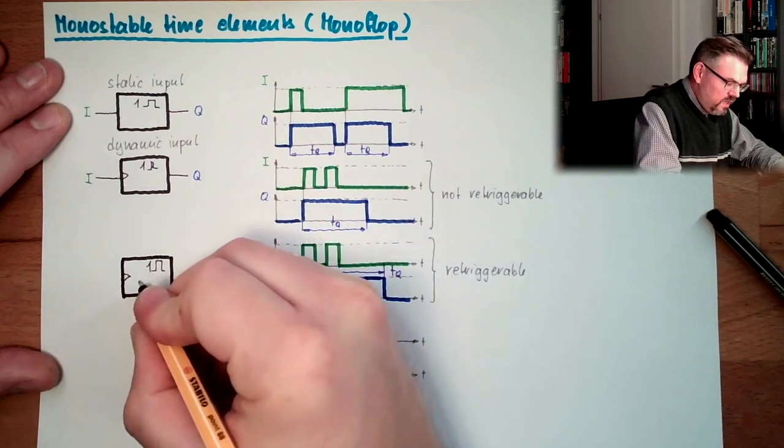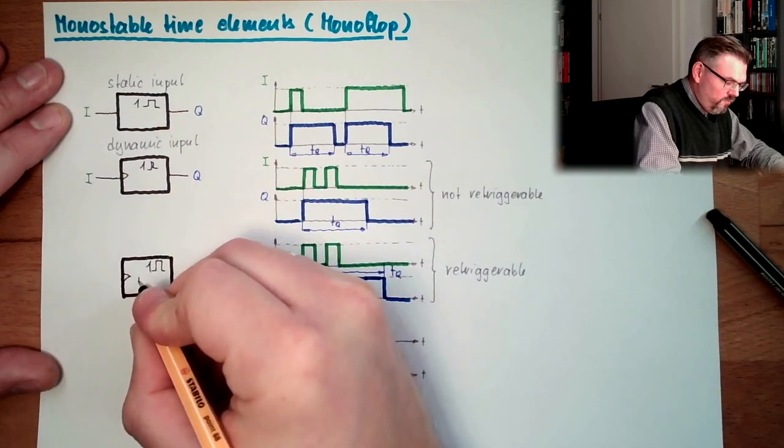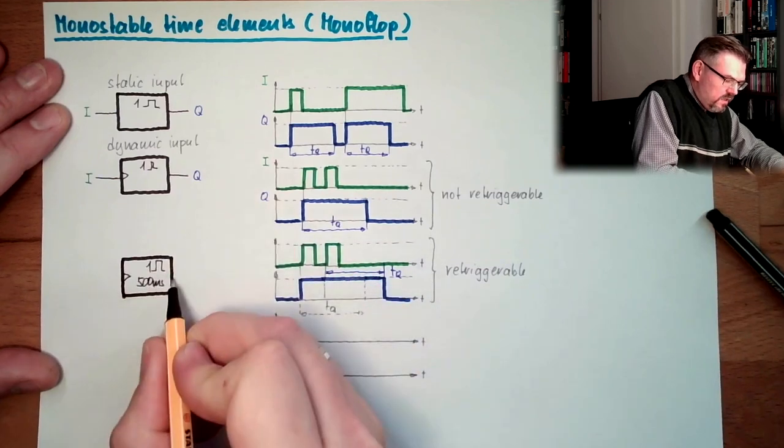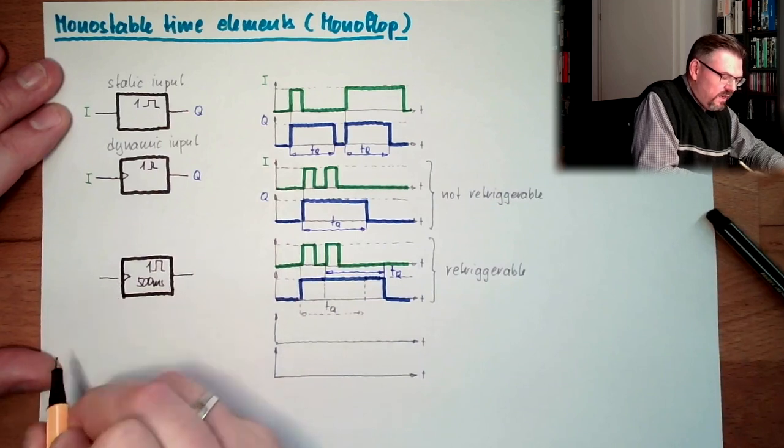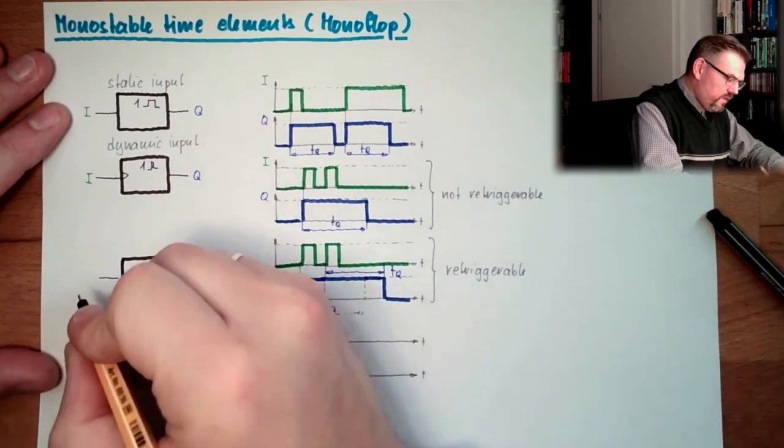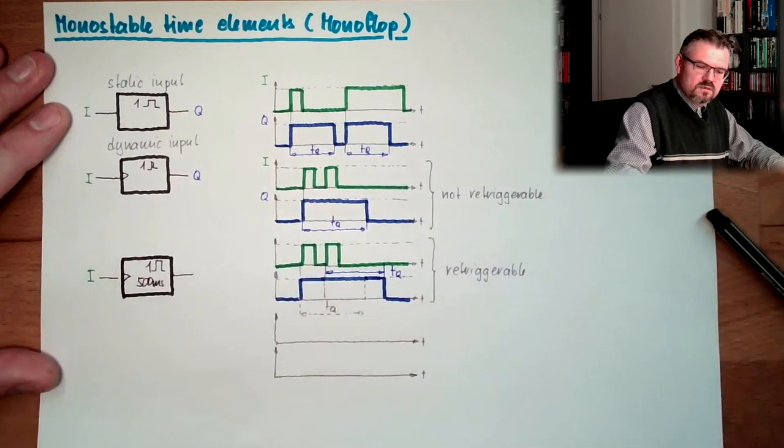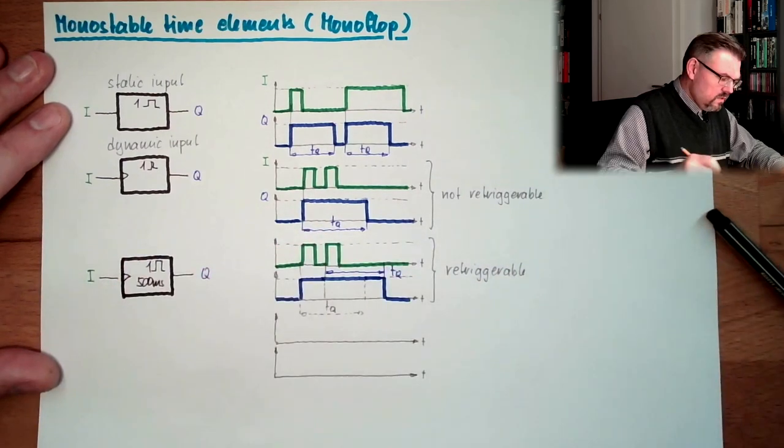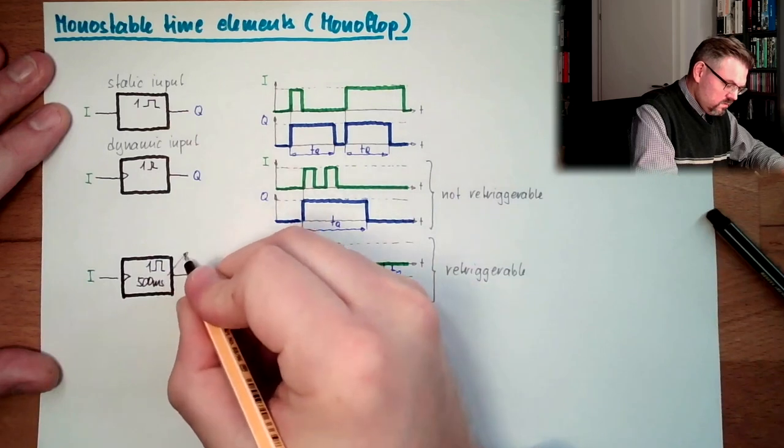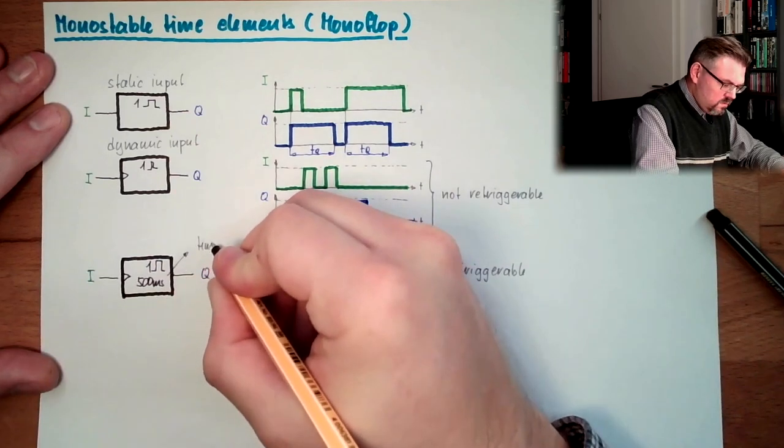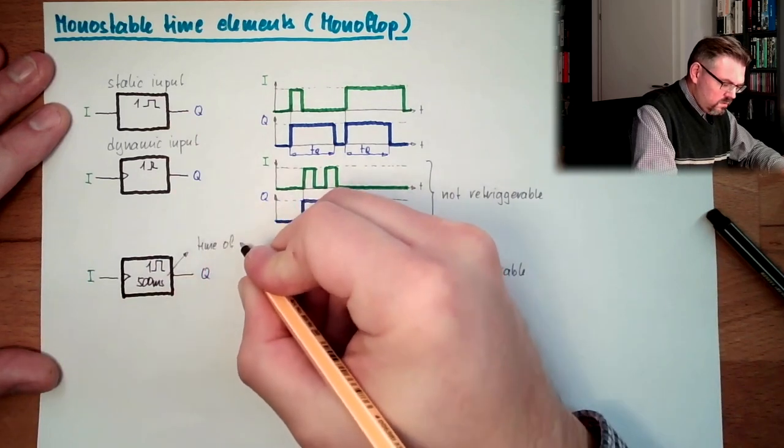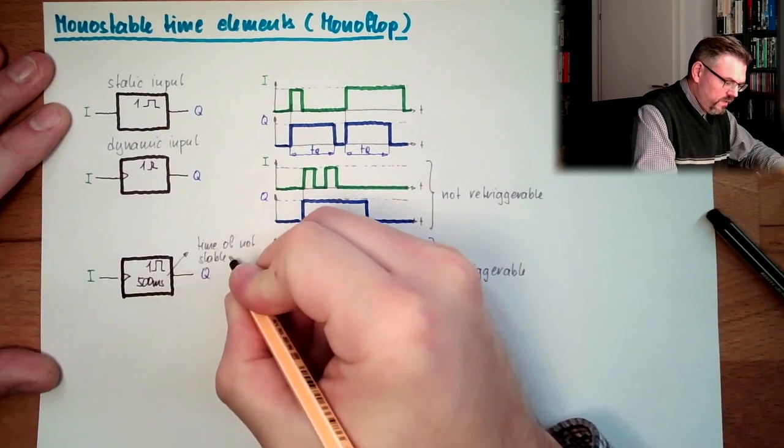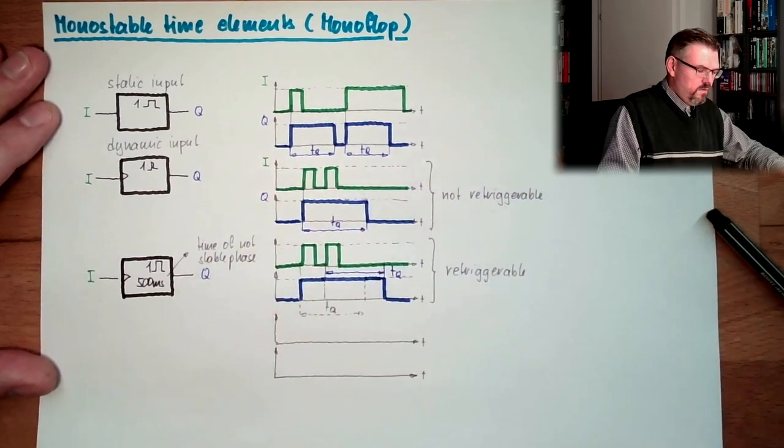And there is, for instance, I don't know, 500 milliseconds. Then this is the time of the not-stable phase. This here, not-stable phase.